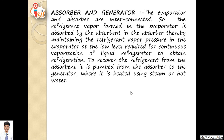The evaporator and absorber are interconnected. The refrigerant vapor formed in the evaporator is absorbed by the absorbent in the absorber, thereby maintaining the refrigerant vapor pressure in the evaporator at the low level required for continuous vaporization. To recover the refrigerant from the absorber, the solution is pumped from the absorber to the generator, where it is heated using steam or hot water.